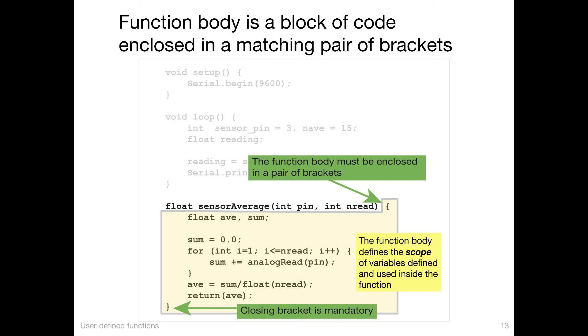And ave, sum, int i are not available outside the scope. So the scope refers to this walled effect of the function body isolating memory and therefore variables from other functions.